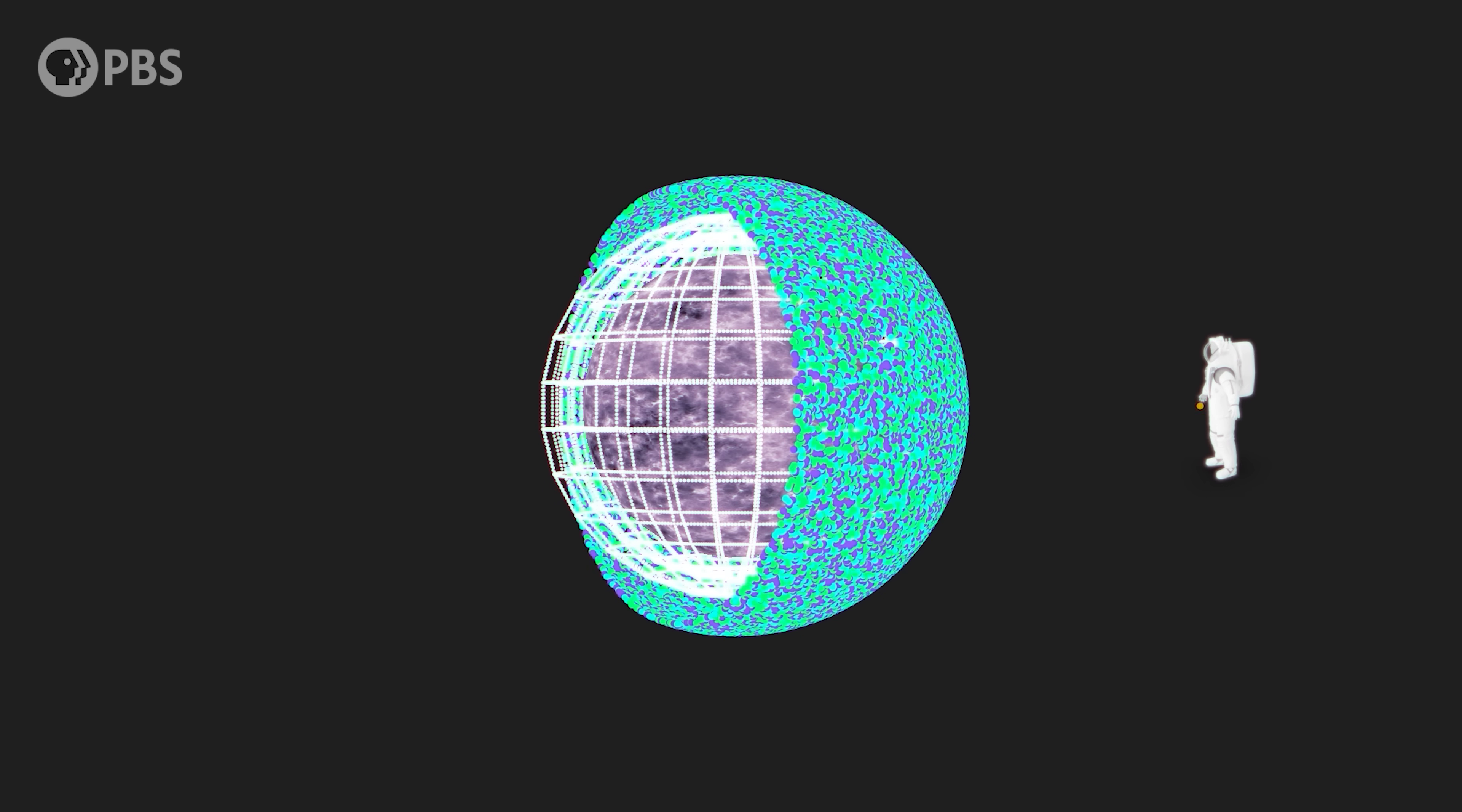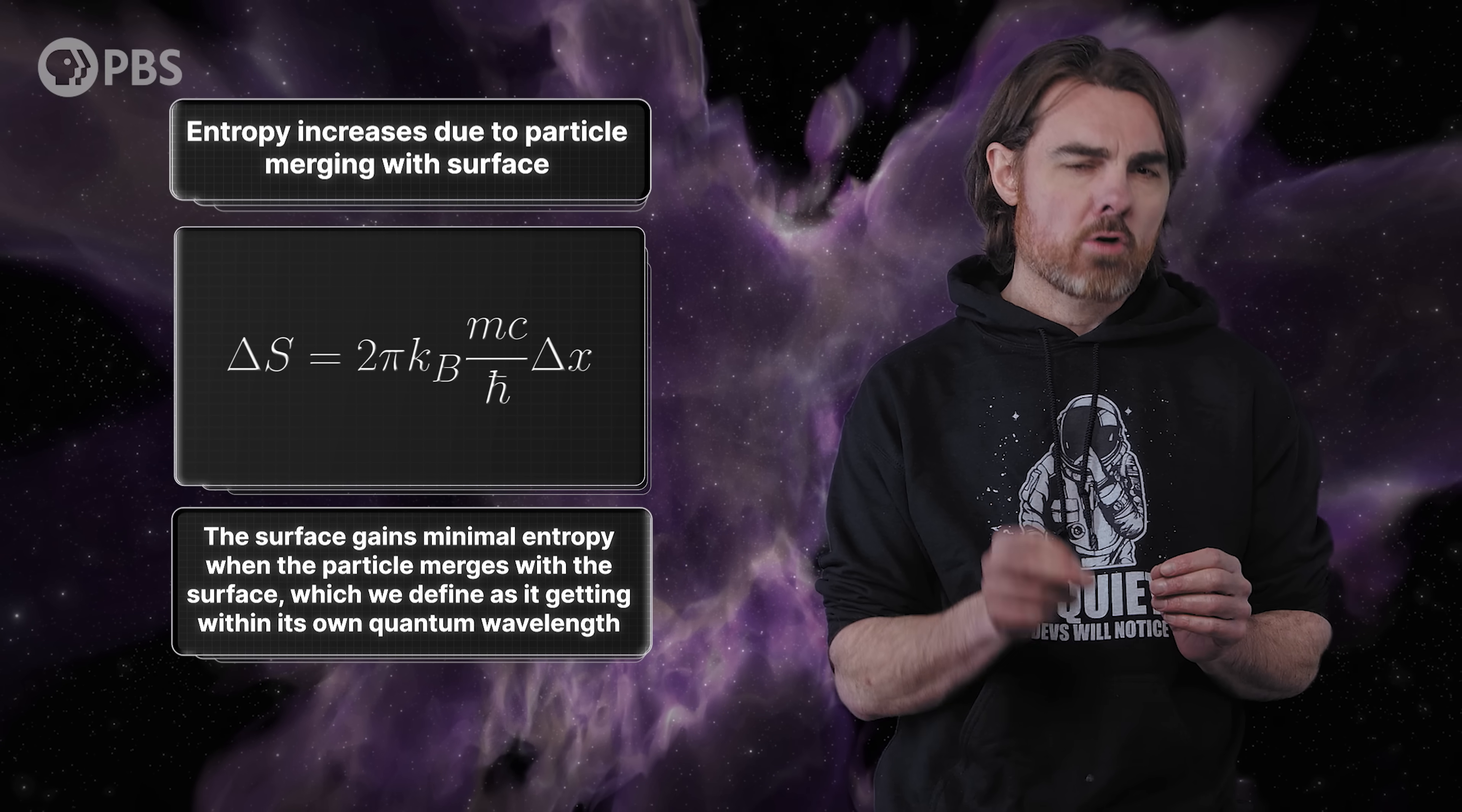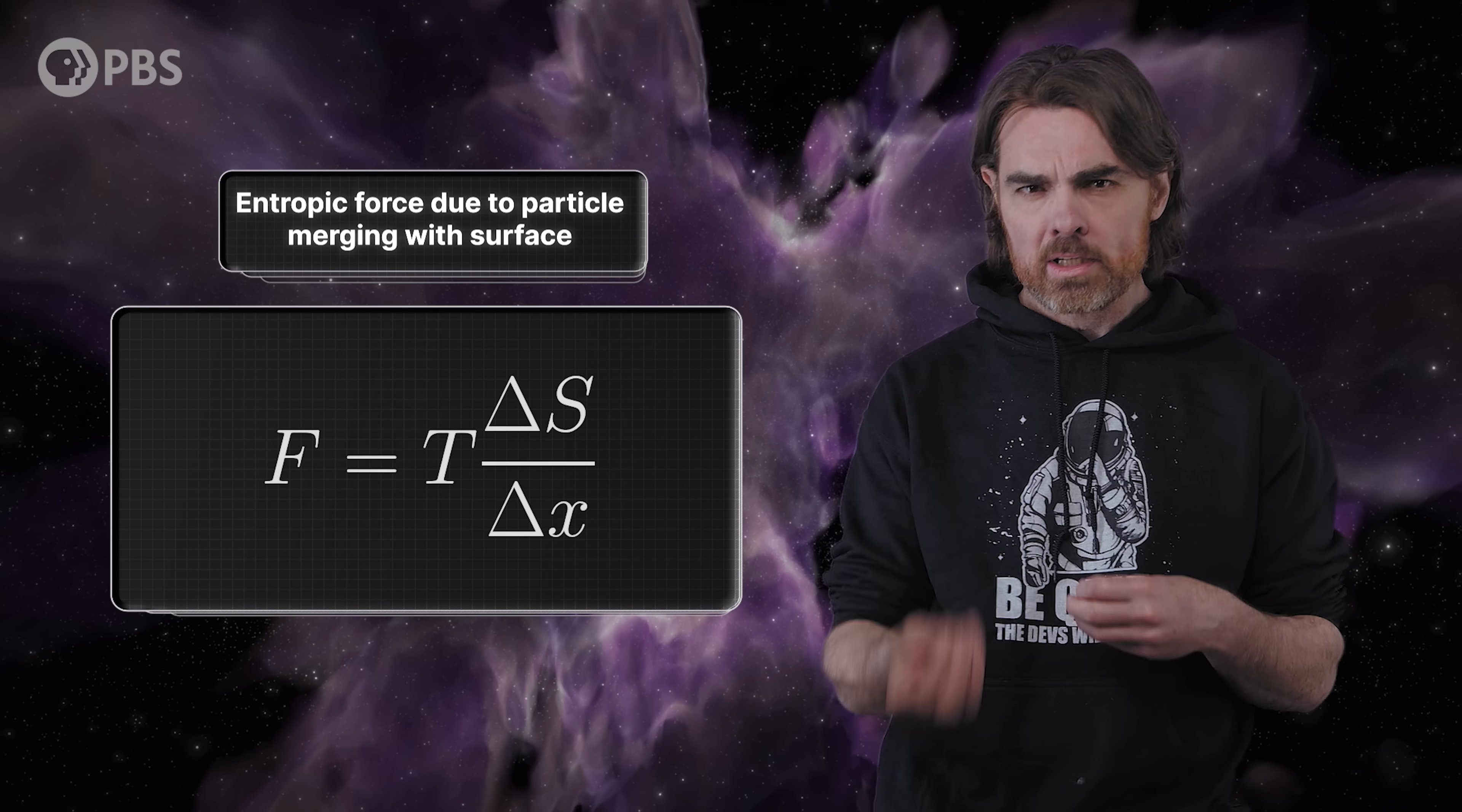Okay, one more step. We want the gravitational force, so we need another particle to feel that force. Let's add a tiny mass and move it close to the surface from the above emerged part of space. When that happens, the entropy of the boundary increases because the information from that object is lost to the external region. The boundary gains the same amount of entropy as dropping something into a black hole event horizon. This equation is just saying that the surface gains minimal entropy, equivalent roughly to a bit, when the particle merges with the surface, which we define as it getting within its own quantum wavelength, in this case the Compton wavelength of the surface.